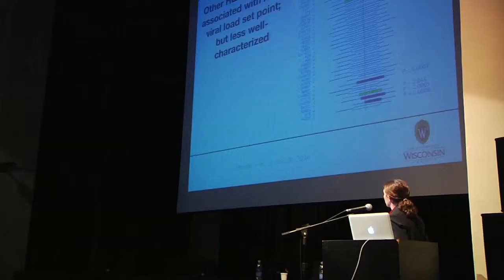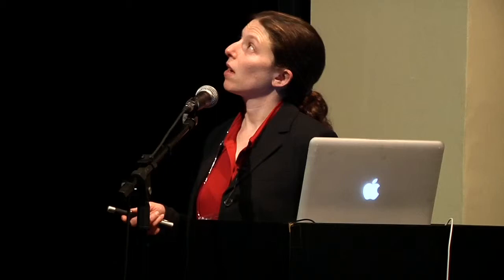There are other HLA alleles associated with lower viral load set point. This figure from 2004 shows HLA B57 at the top — those with B57 are clearly to the left of the average viral load set point line, indicating a lower set point. Now, there are also HLA alleles at the other extreme: HLA B35 PX alleles are linked to faster disease progression. Patients with HLA B35 PX progressed more rapidly to disease compared to those without HLA B35 or with the B35 PY category.